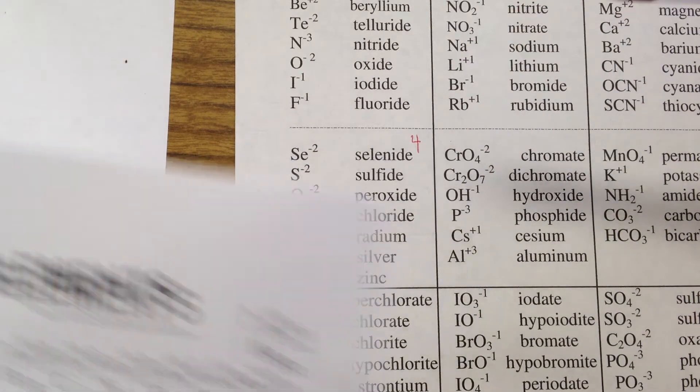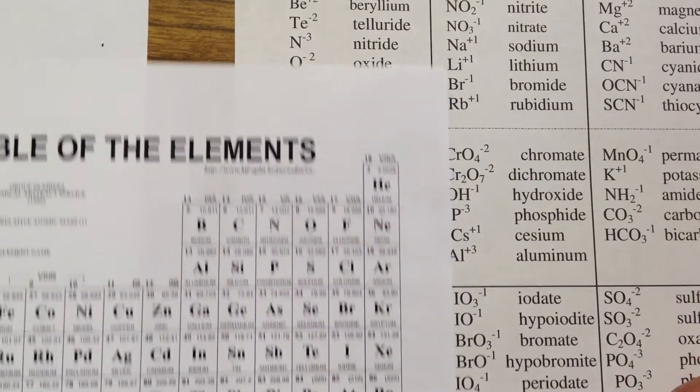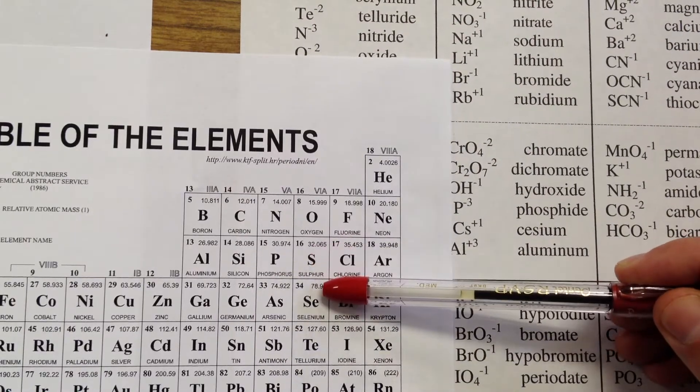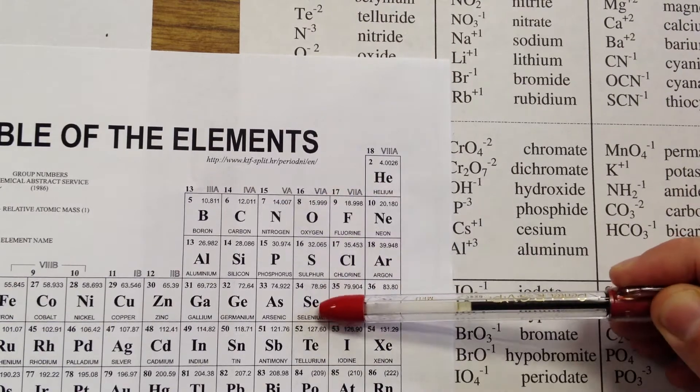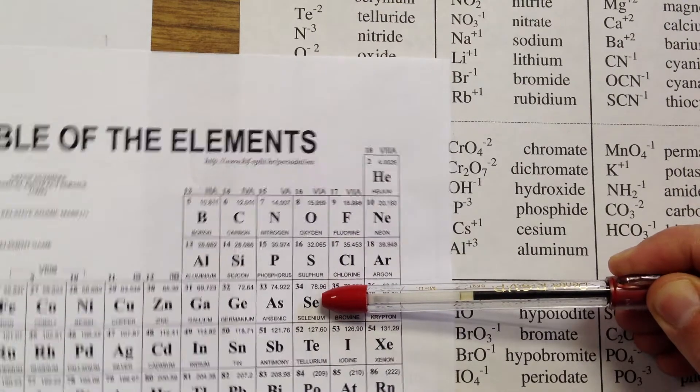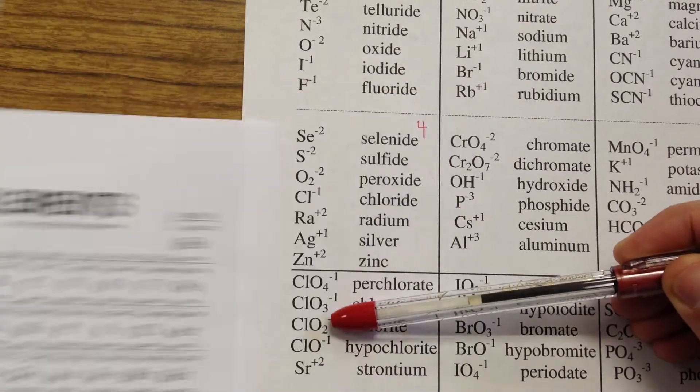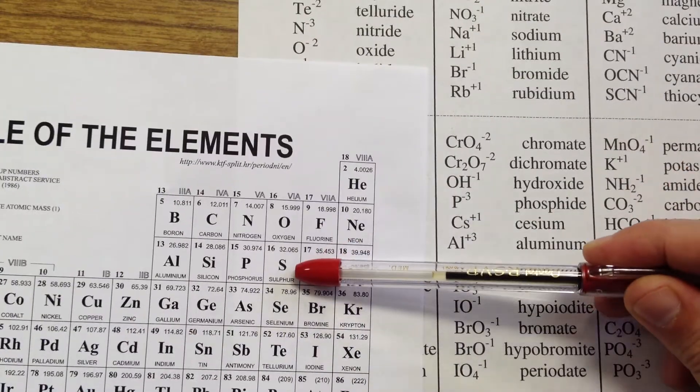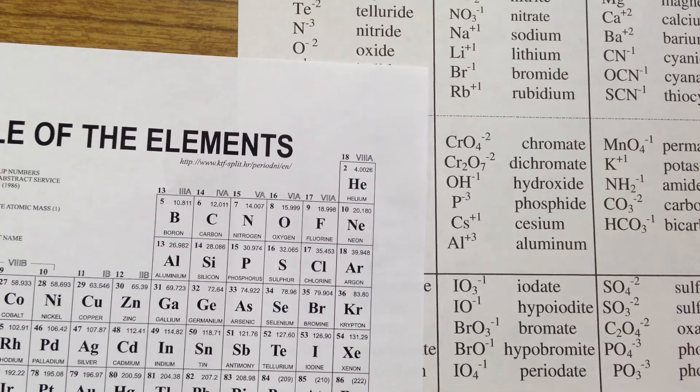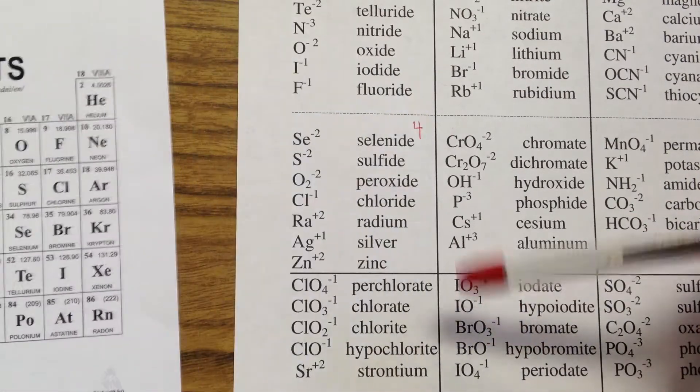Selenide is a negative ion in this section, which means negative zero, negative one, negative two. Ending changes to -ide because it's negative: Se negative two. Same with sulfide, exactly the same pattern for sulfur. Sulfide negative two.